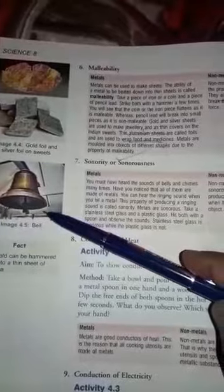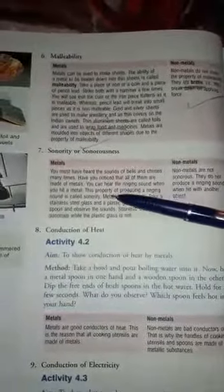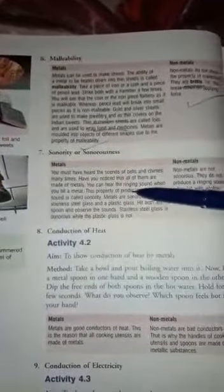...the sound of a bell in school? Many times you have heard. So metals are used to make the bell because they produce the ringing sound, and this property is known as sonority. Metals are sonorous. Take a...